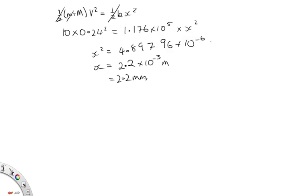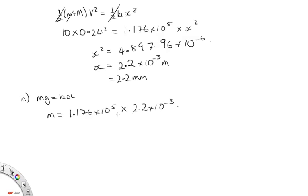Part 3 asks for the reading on the scale at maximum compression. The scale converts spring compression to an equivalent mass via Mg = Kx. So M_reading = K·x / g = (1.176 × 10⁵ × 2.2 × 10⁻³) / 9.8 = 27 kg. So the scales read an equivalent mass of 27 kilograms.